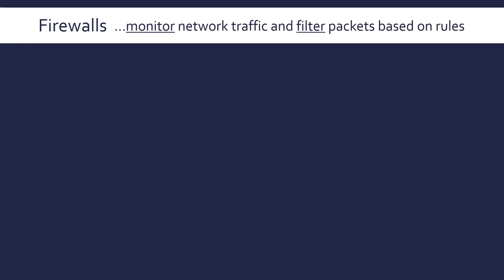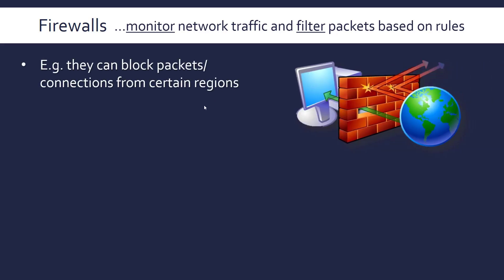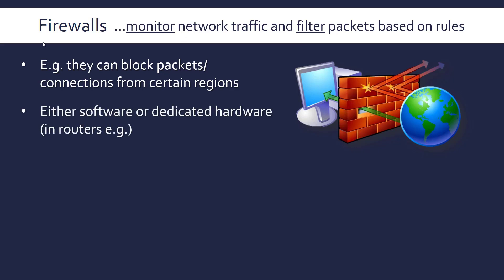Next we have firewalls, which monitor network traffic and filter packets based on set rules. As discussed in the networking videos, data is split into individual packets, and firewalls filter these. They can block packets or connections coming from certain regions. You'd be surprised how many connections come from unexpected places — North Korea, China, South America. A firewall is not just software; it can be a dedicated hardware device, embedded in routers, managed by an operating system, or a dedicated device for a business.